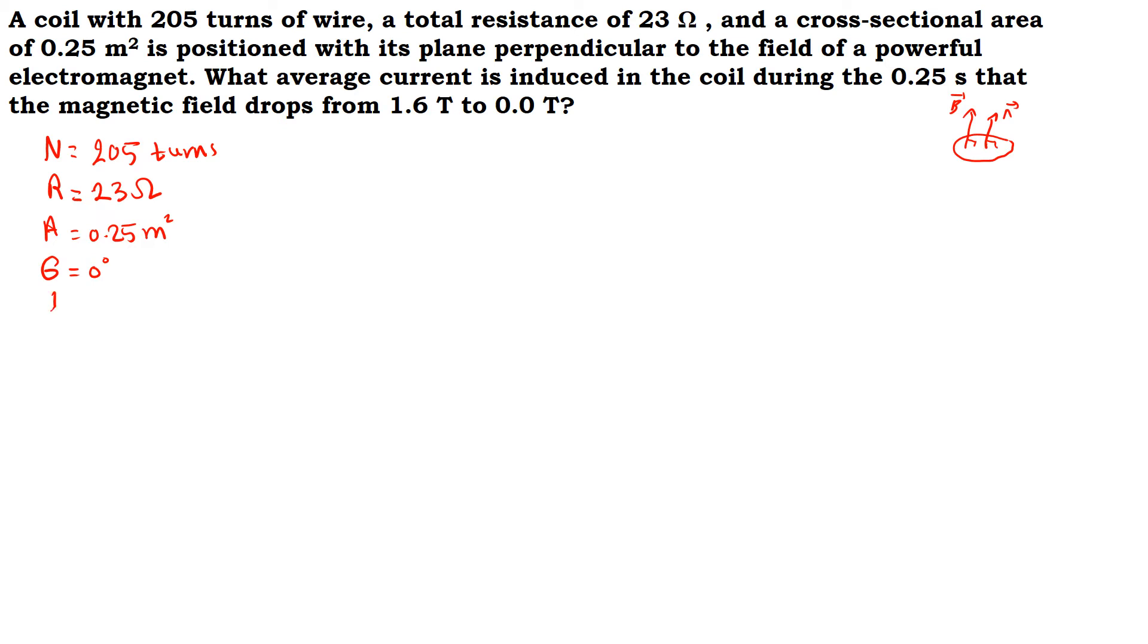Now, what average current? We have to find the current induced in the coil during 0.25 seconds, so the time duration Δt is 0.25 seconds.